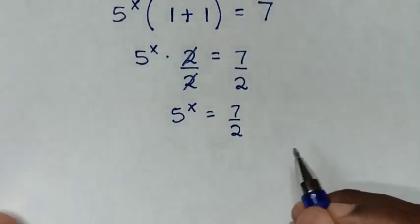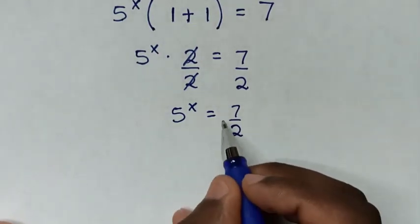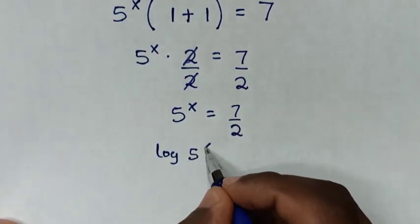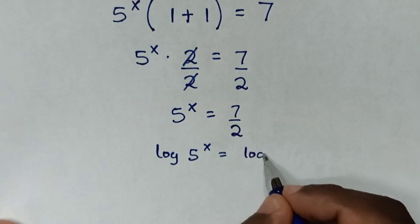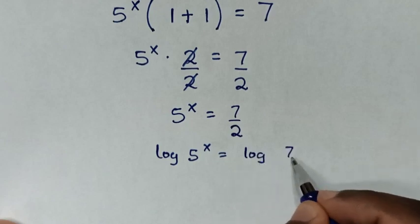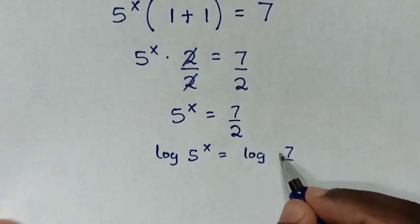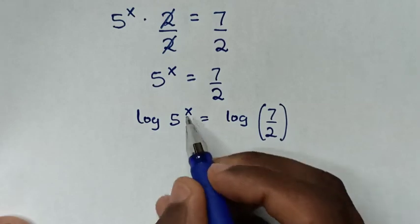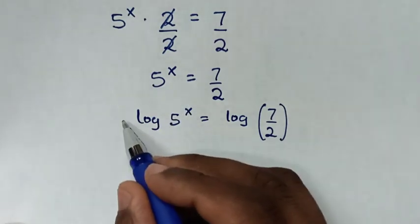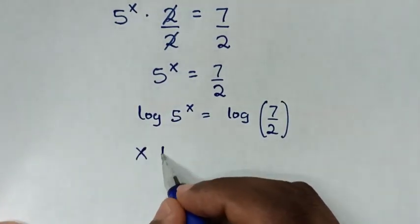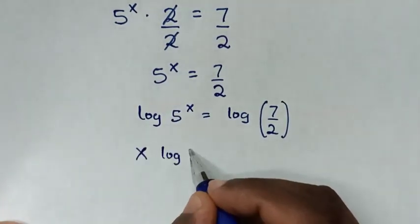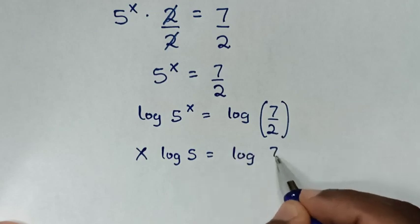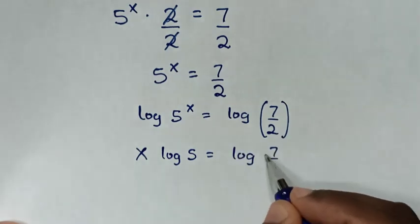Then in the next step, we'll apply log on both sides, so it will be log of 5 power of x is equal to log of 7 over 2. Then this power of x will move to the front, so it will be x times log of 5 is equal to log of 7 over 2.